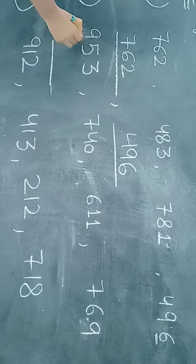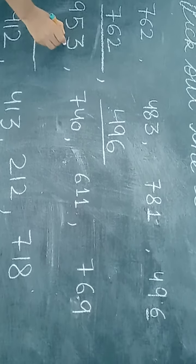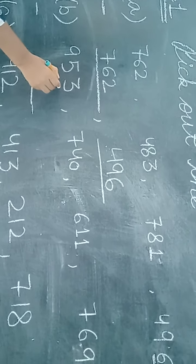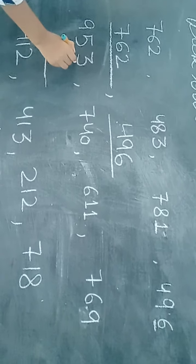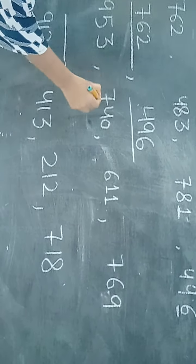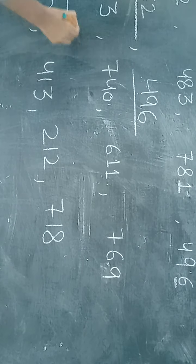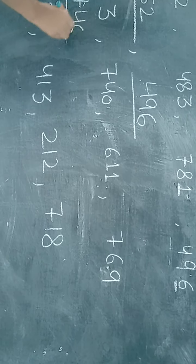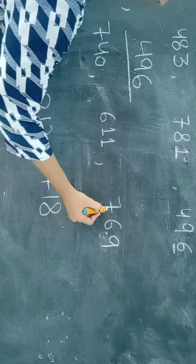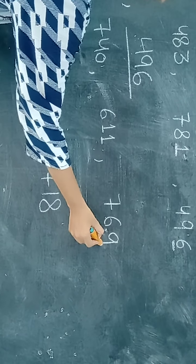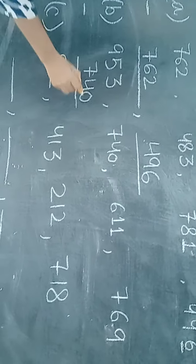Now point B. 953 — ones digit is 3 — hum humesha ones mein check karenge. Agar once mein 2, 4, 6, 8, or 0 hai toh woh even number hai. 3 — it's not an even number. Next — zero: yes, it's an even number — 740. Next: ends in 1 — no. Next: 769 — ends in 9 — no, not an even number. So the B answer is 740.